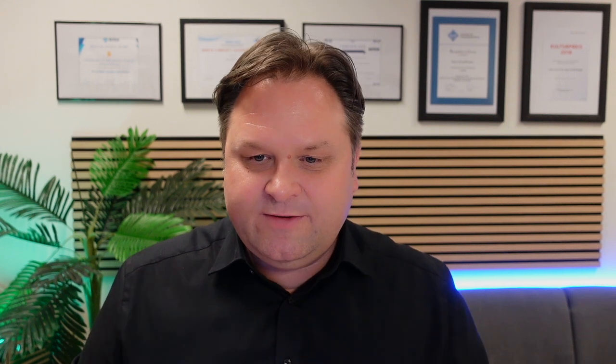On slide 17 we can see how the DCT formalizes the idea of spatial frequency. It measures image content changes based on cosine wave cycles per block, and the result of the cosine is used as a factor for sampling the actual pixel value. This explains why higher frequencies, here 3x for example, sample close by pixel differences between larger regions in the block.